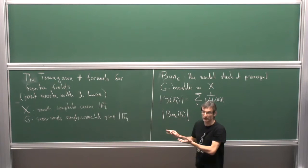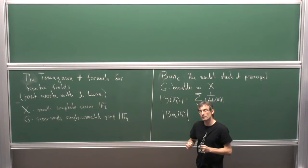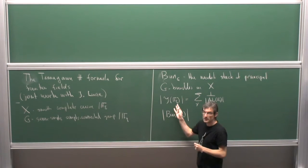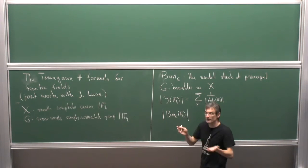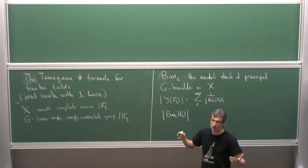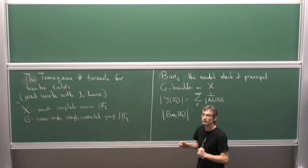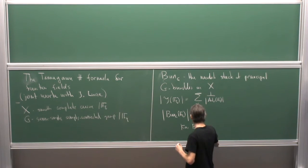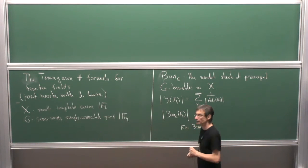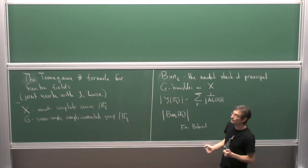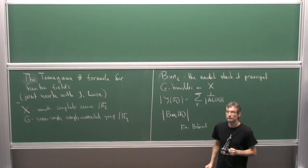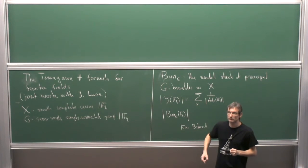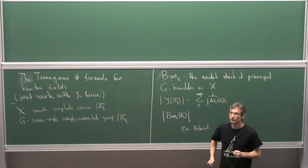The convergence holds for this particular BunG. An audience member asks whether this was worked out by Harder — yes, Harder worked it out; this convergence is essentially the finite volume of the automorphic space. The key input is that every bundle of the type considered is rationally trivial, which holds when G is simply connected.